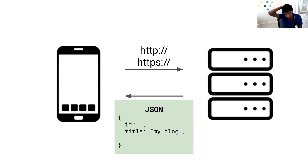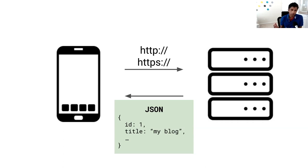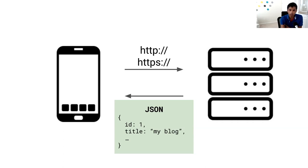Other options for data interchange formats include XML and Protobuf, among others. JSON has become really popular and there are different trade-offs to each. All the code I'll show you assumes JSON.